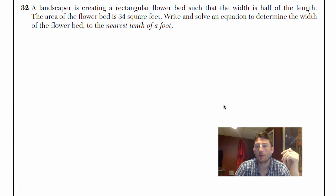Number 32. A landscaper is creating a rectangular flower bed such that the width is half of the length. The area of the flower bed is 34 square feet. Write and solve an equation that determines the width of the flower bed to the nearest tenth of a foot.